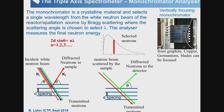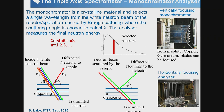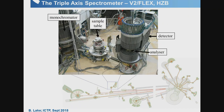To measure the final energy after scattering, we again use Bragg's law with a graphite crystal analyzer. We select the angle 2θ to choose just one wavelength from the scattered beam and scan to select different wavelengths. This is a triple axis spectrometer — here's a picture of ours in Berlin. The monochromator is inside a drum, the sample sits on a table, the analyzer is inside a box, and the detector is at the end.